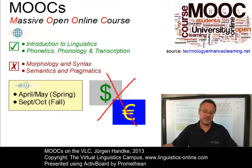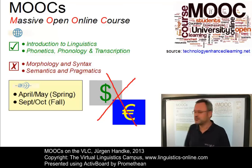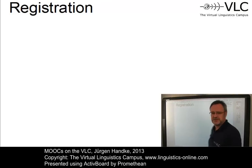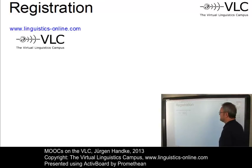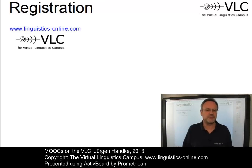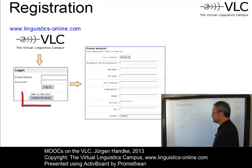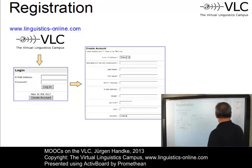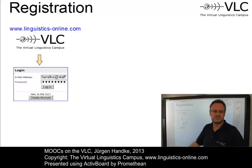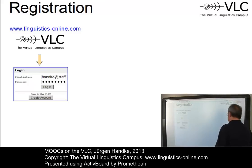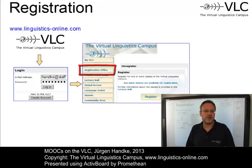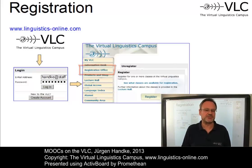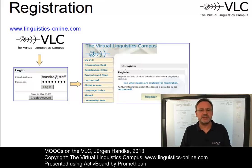Interested? Before you start, you have to register. However, registration is really simple. Just load the VLC homepage, www.linguistics-online.com, and create your free account. After your account has been created, you can log in with your access data. Then you should visit the VLC registration office, where you can register for one or several classes via a few mouse clicks. After you submit your class registration, you will receive a confirmation via email.